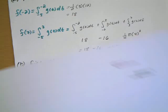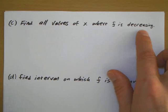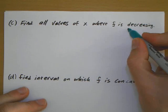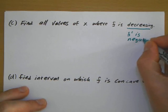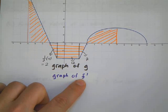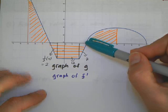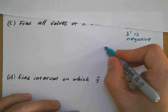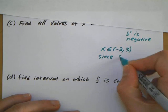Part C: Find all values of x where f is decreasing. Since we're looking for f decreasing, that's going to be where f prime is negative. This will be rather easy since we already established that this is the graph of f prime. For it to be negative, I'm looking where it's below the x-axis. It's below the x-axis from negative 2 to positive 3. So x is decreasing from negative 2 to positive 3.